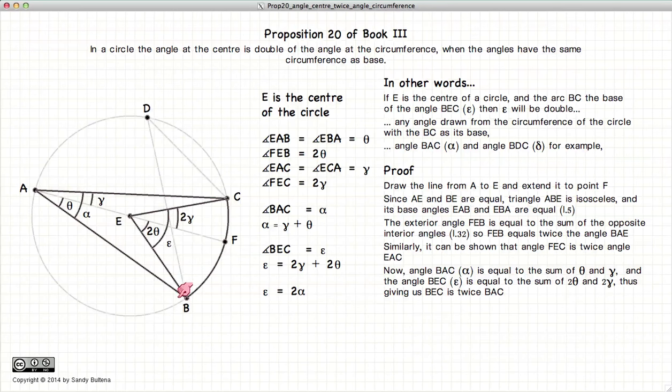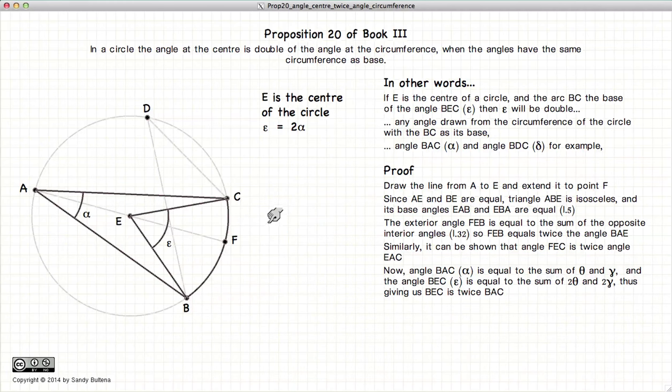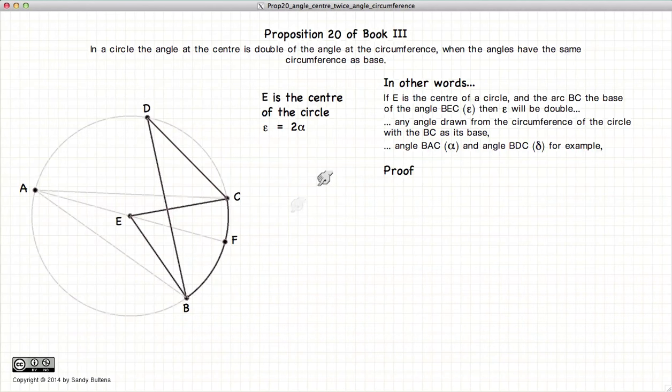So we've just demonstrated that this angle is twice that angle. Now carrying on, we're going to do the same for point D. So now we're going to demonstrate that BDC is half the angle of BEC.